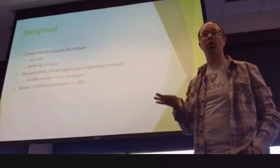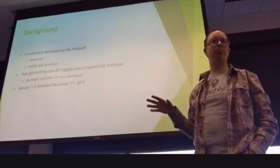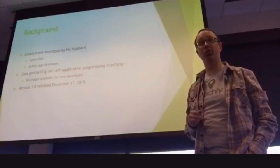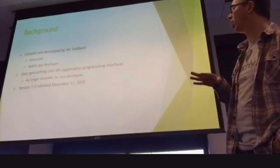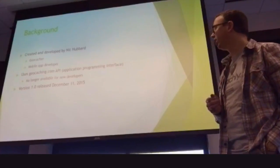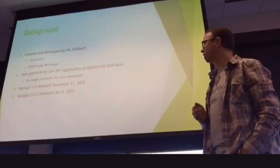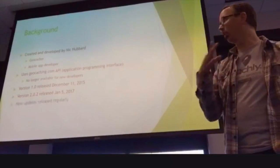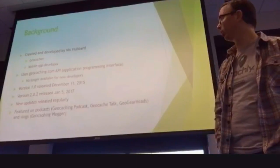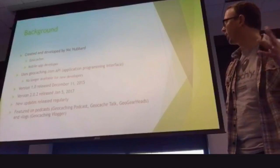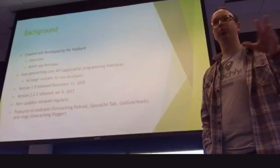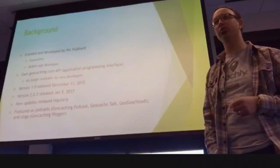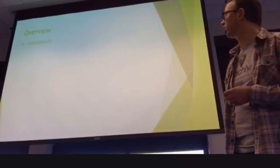The API is actually no longer open to new developers. So if someone wanted to make a new app, that window is closed. Fortunately, Nick was able to sign up and access that official API several years ago. The first version was released December 11th, 2015, and now we are on version 2.0.2, which released January 5th, 2017. The app is relatively new but there have been a lot of updates. He is working on new updates regularly and has been featured on geocaching podcasts including GeoGearHeads and the geocaching vlogger on YouTube.